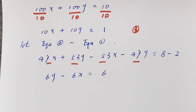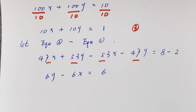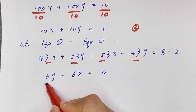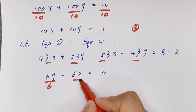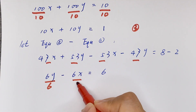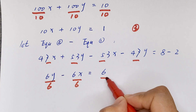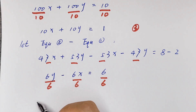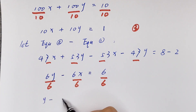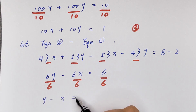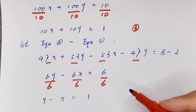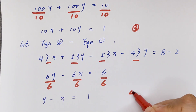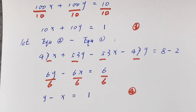Now we divide both sides by 6. It will be y minus x equals 1. We let this equation 4.